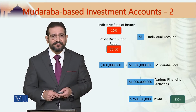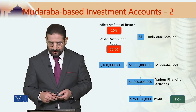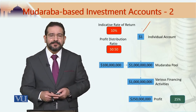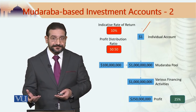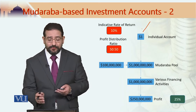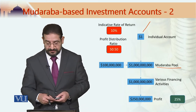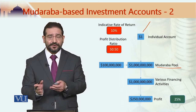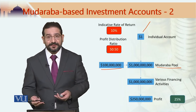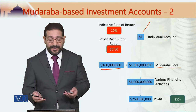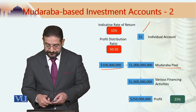Let's see this with the help of an example similar to the one used in our previous analysis module. One individual puts one dollar into an unrestricted profit sharing investment account. Of course there are thousands of other people who have contributed to this Mudaraba pool. There is one billion dollars in the Mudaraba pool, out of which 100 million is contributed by the shareholders of the bank and the remaining 900 million comes from the investment account holders.